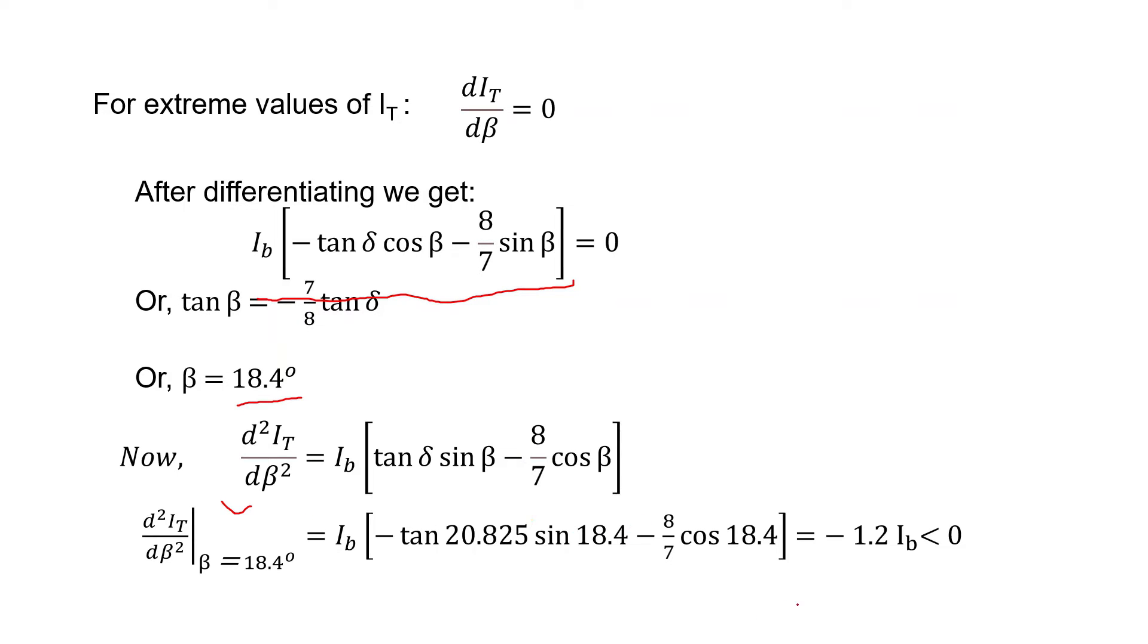When we perform the second derivative, the value comes out to be negative 1.2 Ib. We know that when the second derivative is negative, it would be maximum at beta equal to 18.4 degrees.